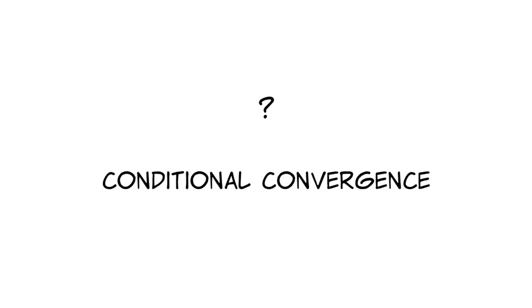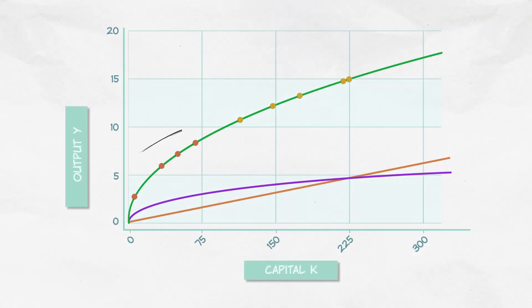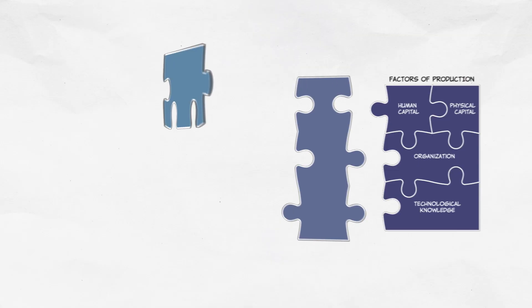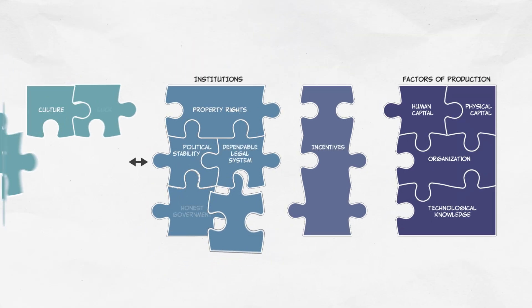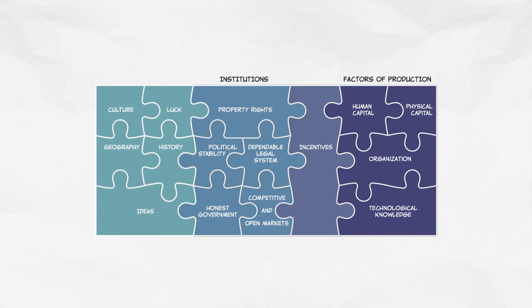What is conditional convergence? Conditional convergence is the tendency that poor countries grow faster than richer countries and converge to similar levels of income. However, there's a caveat: this convergence is conditional on institutions and other factors being similar. Two countries with really different institutions are not going to converge. At least, that's the theory.